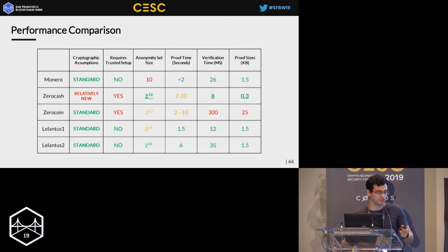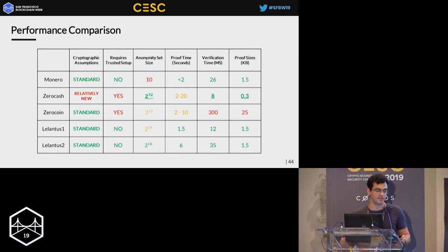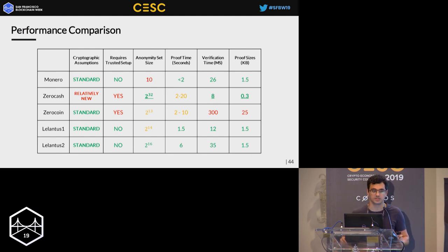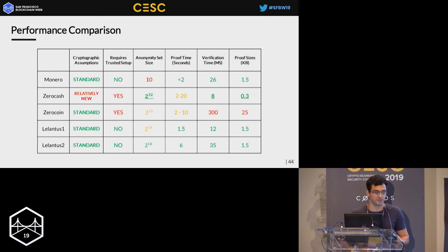Comparing Lelantus performance with other privacy technologies: proof sizes and performance are comparable with Monero, although we support much larger anonymity sets, making the scheme resistant against flooding or transaction graph analysis attacks. It's hard to match Zcash performance, which comes with minimum proof sizes and blazingly fast verification, but unlike Zcash, we don't require any trusted setup, we use only standard cryptographic assumptions, and we don't employ any complex arithmetic circuits — making this a design that is easy to implement, test, and cryptanalyze.